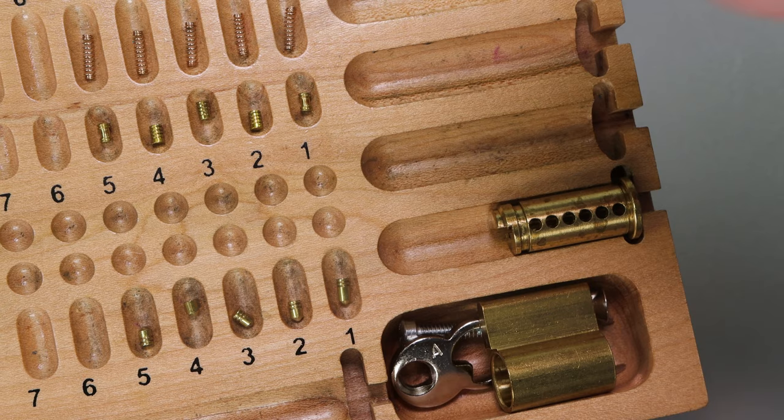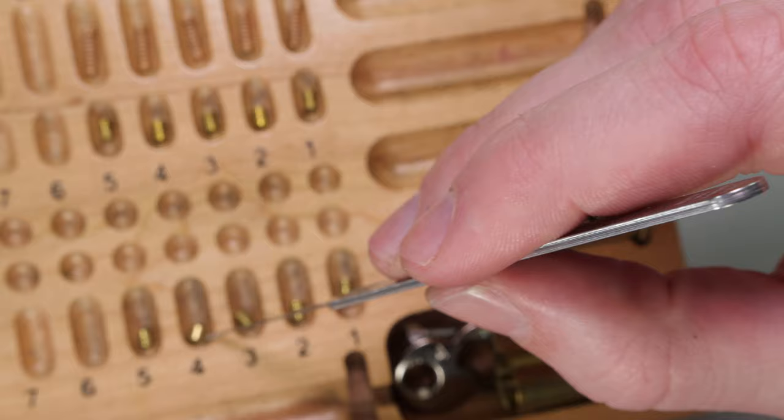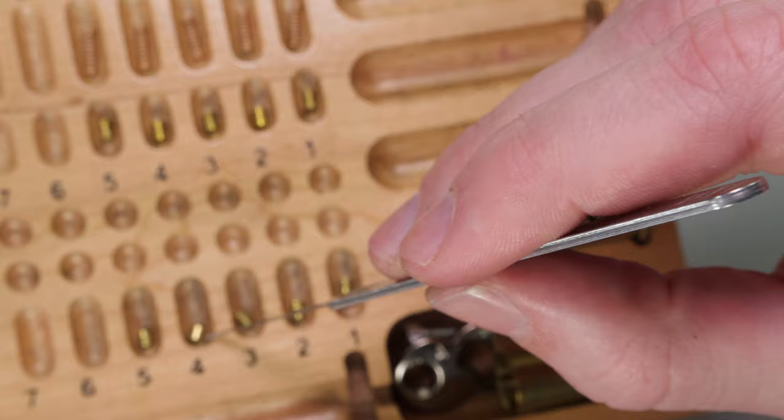Then a standard key pin, which is one of the shorter ones, over a serrated pin over a copper spring. And then a short serrated key pin over a serrated spool over a copper spring.